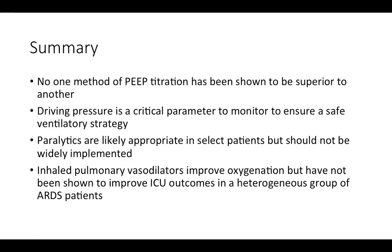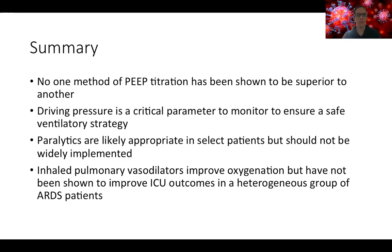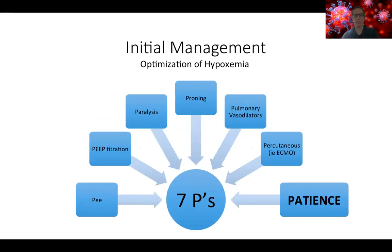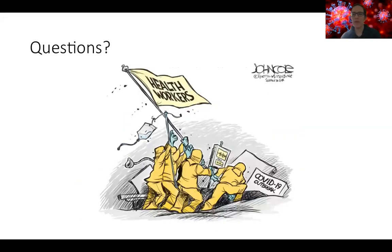To summarize: no one method of PEEP titration has been shown to be better than another, but driving pressure is probably an important parameter to monitor. Paralytics are likely appropriate in select patients but should not be routinely or widely implemented. Inhaled pulmonary vasodilators do improve oxygenation but have not been shown to improve ICU outcomes in a heterogeneous population. One of my residents suggested a seventh P — patients — as COVID patients seem to take a long time to recover and are very sensitive to small changes. A lot of this just requires time.